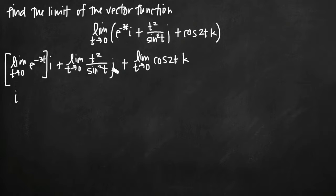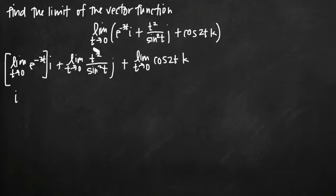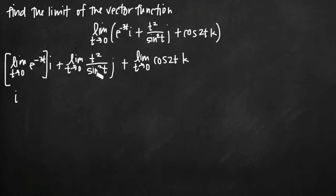For the second term multiplied by j, if we try to take the limit as t goes to zero, we'll get zero in our numerator and also zero in our denominator because sine of zero is zero. When we have zero over zero, remember that's an indeterminate form, and we can use L'Hôpital's rule to try to simplify it.